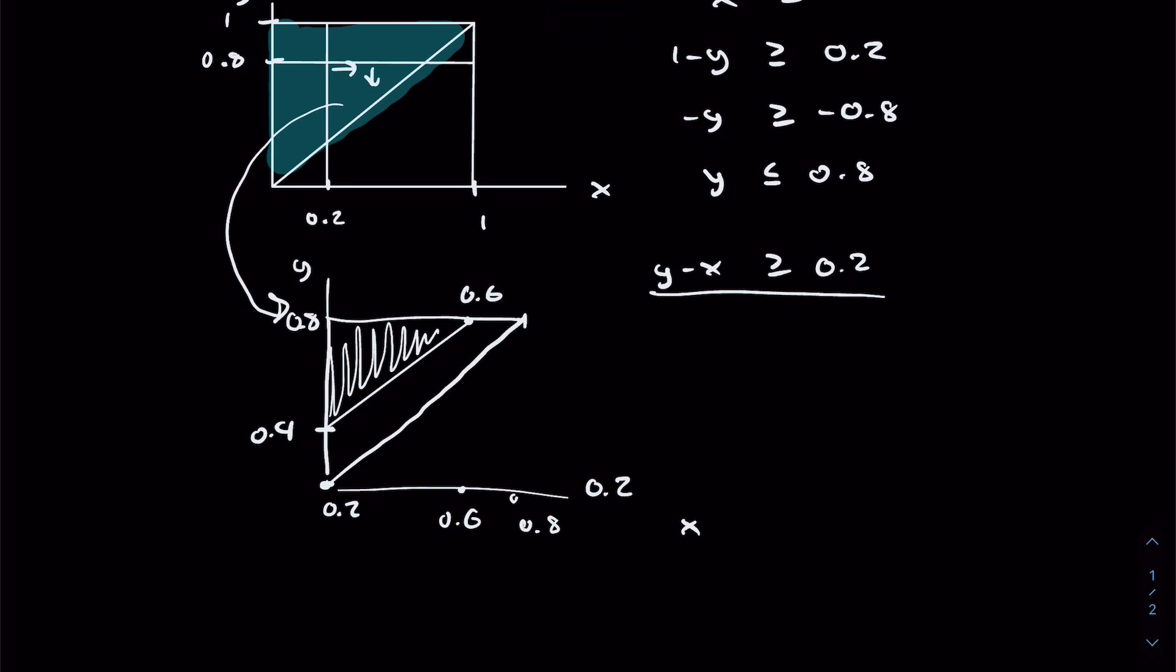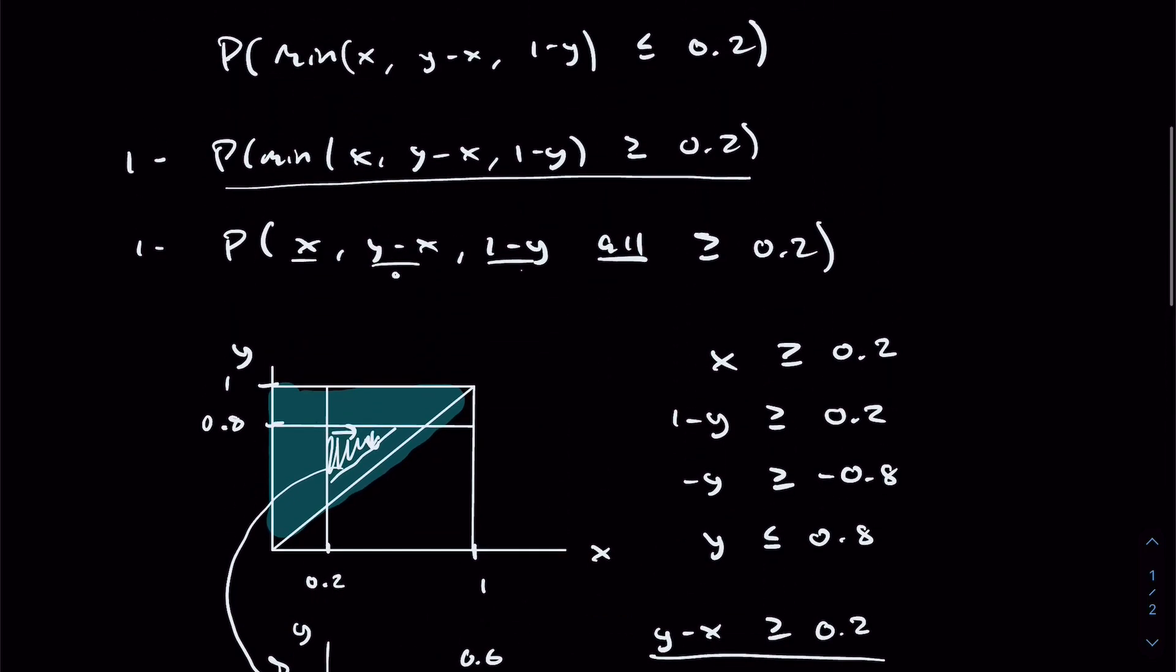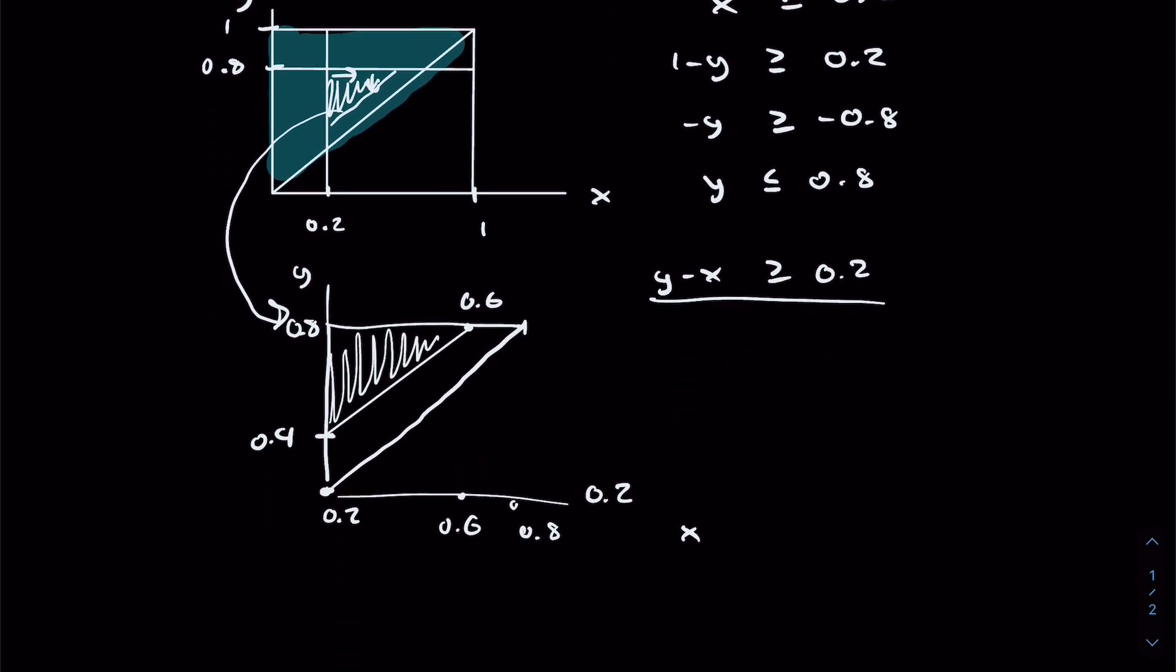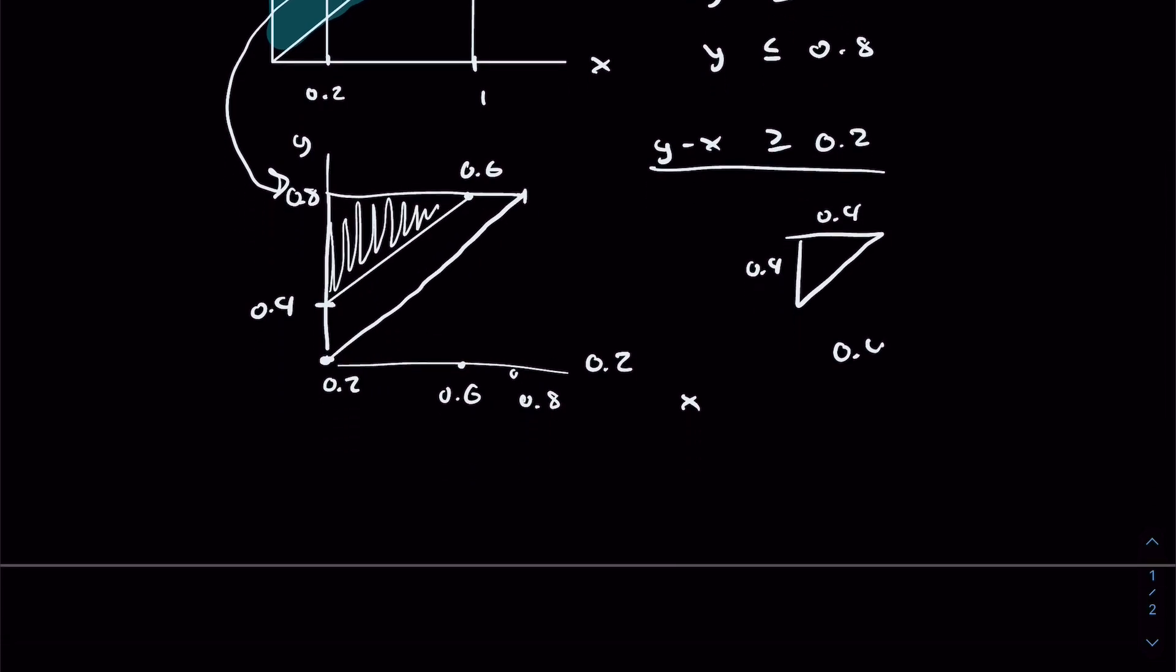So we now have this really small triangle, which is this one right there, as a subset of our entire big blue triangle. And the proportion of our small triangle to the blue triangle is the probability that we are trying to solve, this one right here. So let's find the area of this small inner triangle. We know the height of it is 0.4, the width also 0.4. Area of a triangle is 0.4 times 0.4 divided by 2, 0.16 divided by 2, or 0.08.